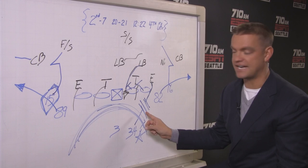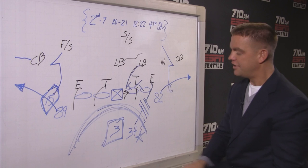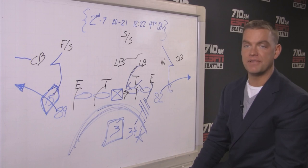Number two, Russell, you've got to identify. When you've got a mirrored route on both sides, you really have to be cued into your pre-snap and your post-snap read. And pre-snap, everything tells you, I'm going to go to Jermaine.